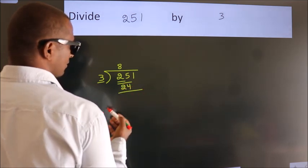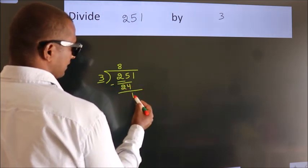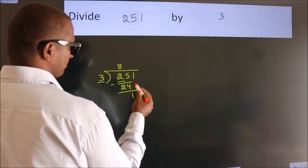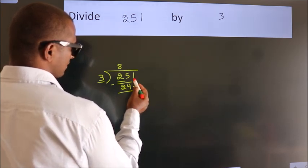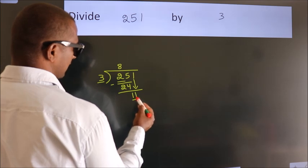Now we should subtract. We get 1. After this, bring down the beside number. So 1 down. So 11.